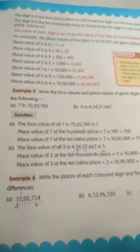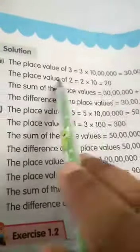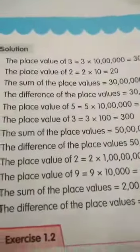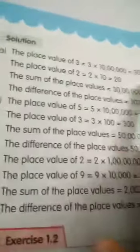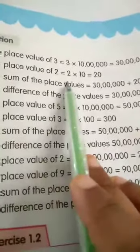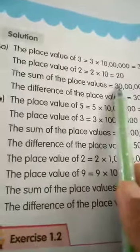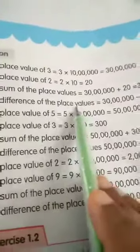This is page number 10. The place value of 3 is 3 × 10 lakhs = 30 lakhs. The place value of 2 is 2 × 10 = 20.